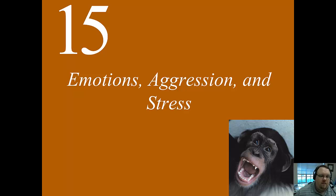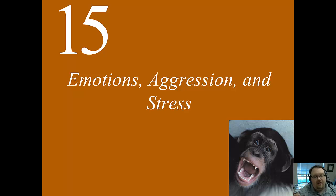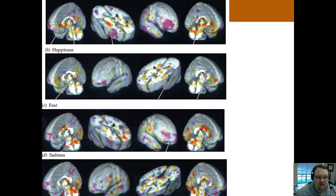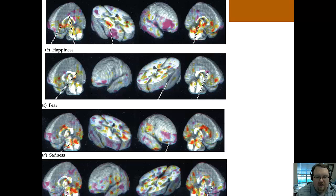Welcome back to our discussion of emotions, aggression, and stress. We're going to talk a little bit more about emotions and correlates in the brain, and then we're going to get into aggression and stress. We'll talk about the parts of the brain that seem to be particularly involved in emotion. However, I wanted to show you this because it really should be noted that emotions activate many different parts of the brain.